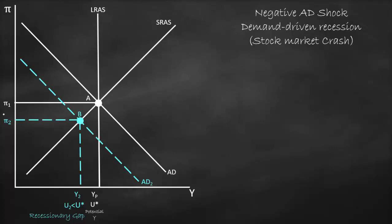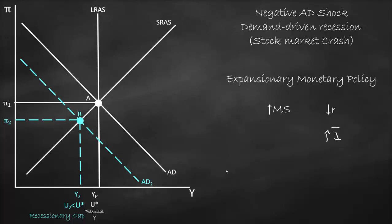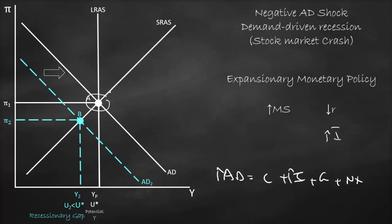In the same recessionary scenario, if the central bank uses an expansionary monetary policy — higher money supply or lower interest rates — lower interest rates result in higher investment. Since aggregate demand equals C plus I plus G plus NX, an increase in investment shifts aggregate demand to the right. This eliminates the recessionary gap and returns us to the original equilibrium at point A, with full employment output and inflation level one.